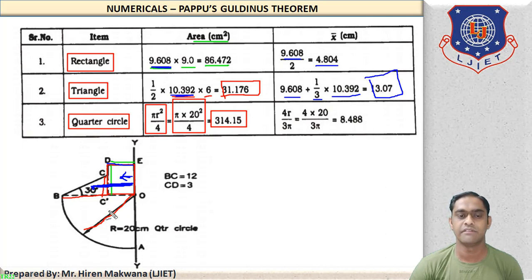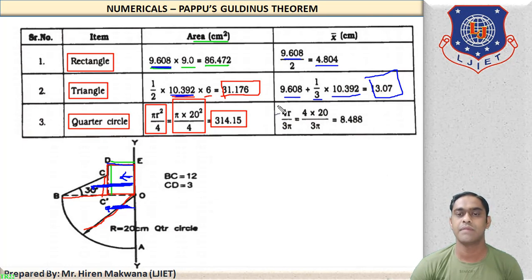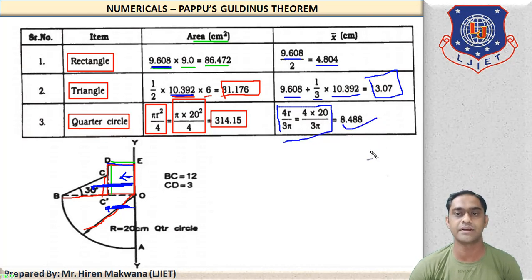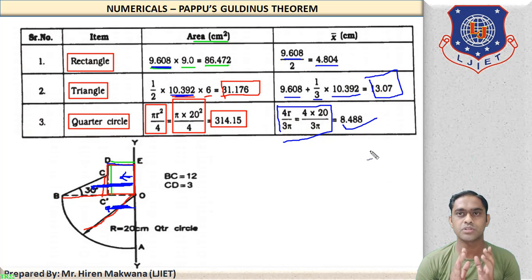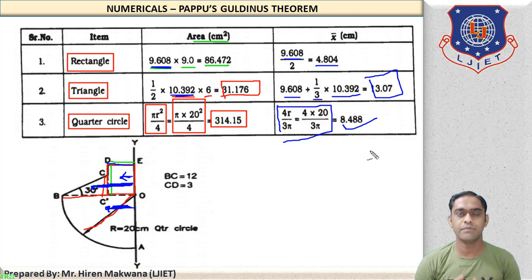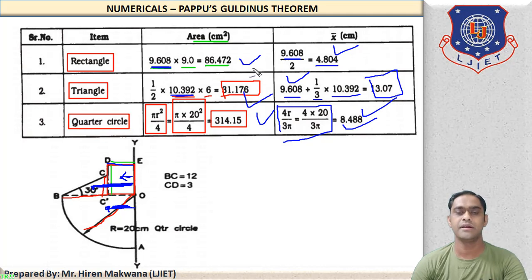For the quarter circle, the centroid is given by 4R/3π from the center. Substituting R = 20: X₃ = 4 × 20 / (3π) = 8.488 cm. Now volume = A₁X₁ + A₂X₂ + A₃X₃, then divided by A₁ + A₂ + A₃ to get X̄.